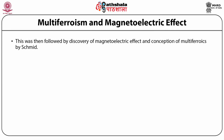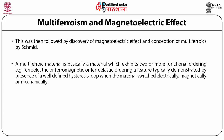This was followed by the discovery of the magnetoelectric effect and the concept of multiferroics. A multiferroic material is basically a material which exhibits two or more functional orderings — such as ferroelectric, ferromagnetic, or ferroelastic ordering — a feature typically demonstrated by the presence of a well-defined hysteresis loop when the material is switched electrically, magnetically, or mechanically.